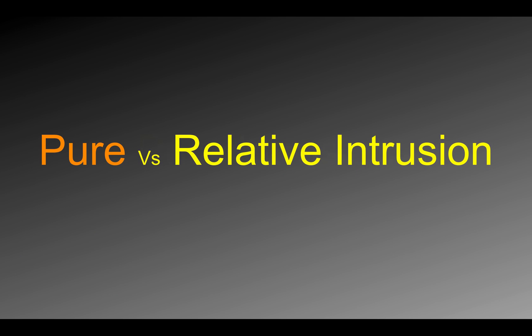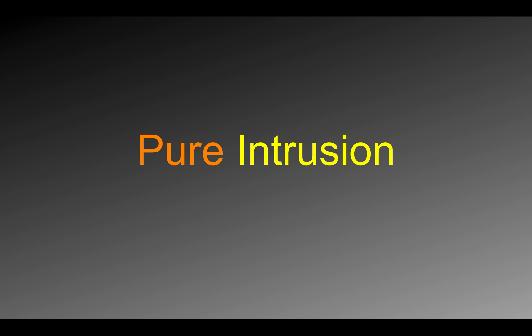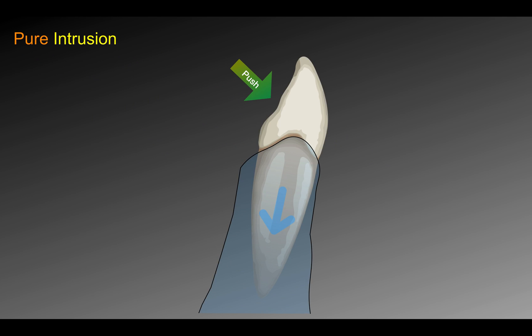So the difference — we can start with what is a pure intrusion. What we want to do is just a vertical movement in the incisor. For example, we want to intrude incisors. So we are going to use the perpendicular edge of the tooth and, without changing the torque, pushing with the liner, we are going to do a pure intrusion movement — without changing the torque.